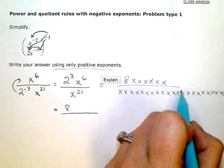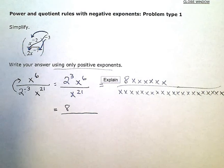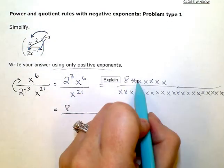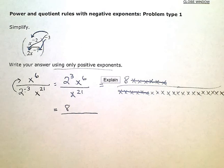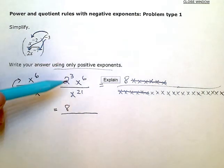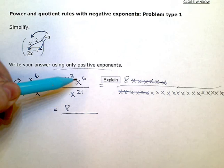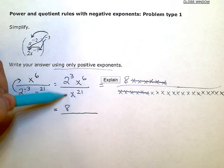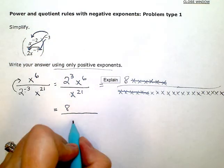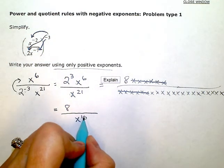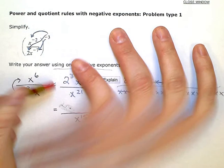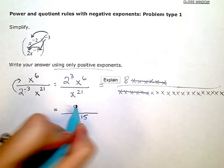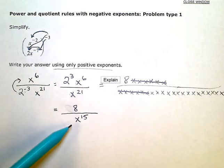I have 21 factors of x in the denominator. So I can cancel 6 x's with 6 x's. You take whichever denominator is bigger — the 21 — and subtract out the 6, and that leaves me 15 x's in the denominator. So my final answer, moving the 8 over so it looks a little better, is 8 over x to the 15th.